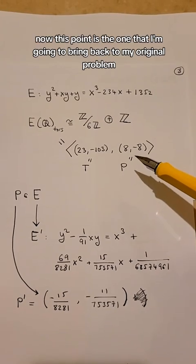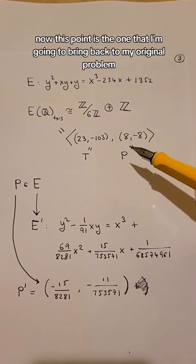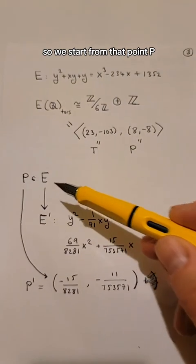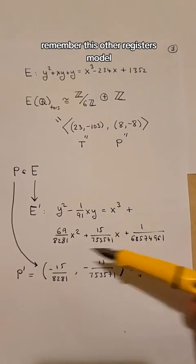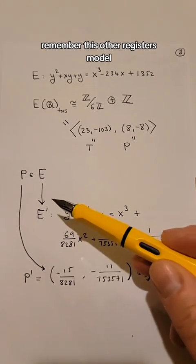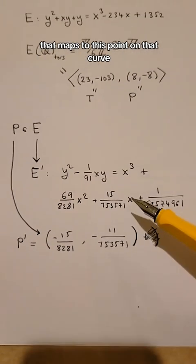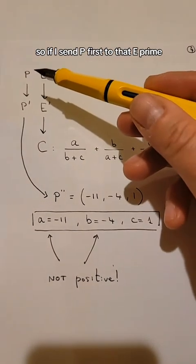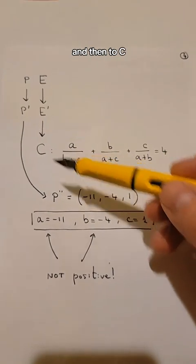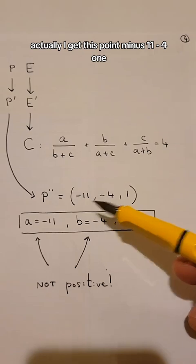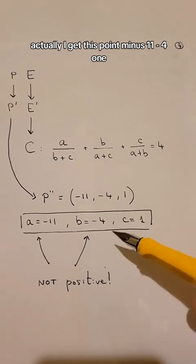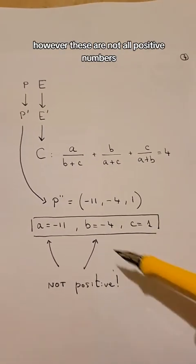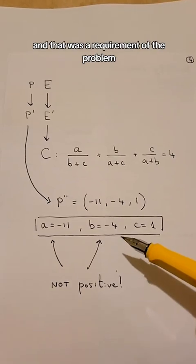Now this point is the one that I'm going to bring back to my original problem and see if that's a solution that I want. So we start from that point P and send it to, remember, this other Weierstraß model. That maps to this point on that curve. But we actually want the point on this curve. So if I send P first to that E prime and then to C, actually I get this point: (-11, -4, 1). And that is a solution of our original equation. However, these are not all positive numbers, and that was a requirement of the problem.